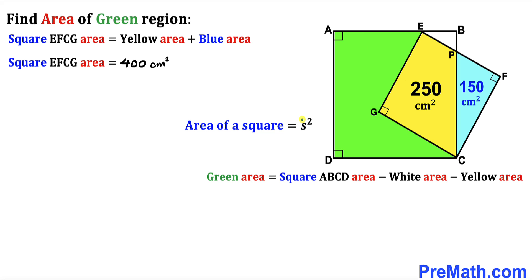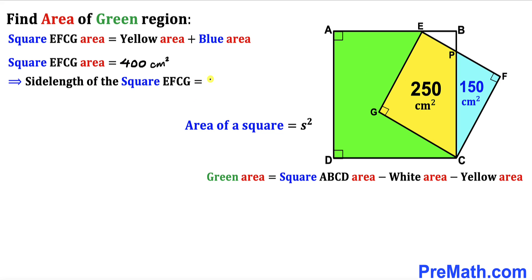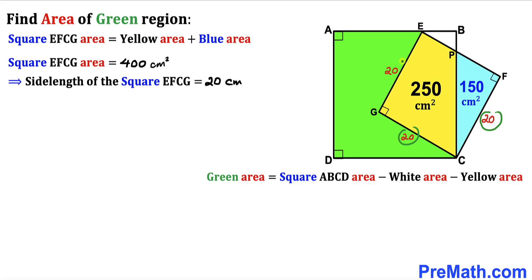Recalling the area of a square formula — Area equals S squared, where S is the side length — 400 can be written as 20 squared. So the side length of square EFCG turns out to be 20 centimeters across the board.